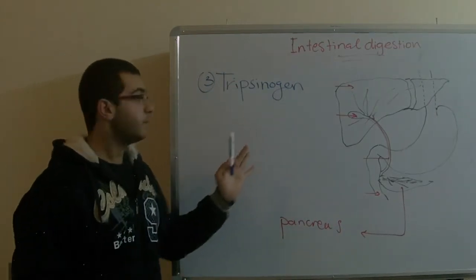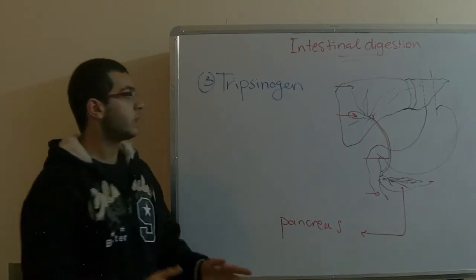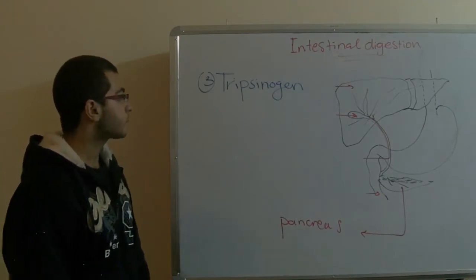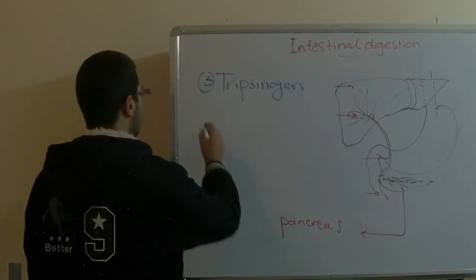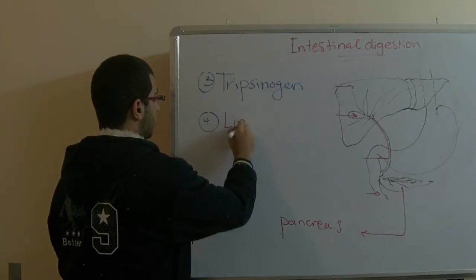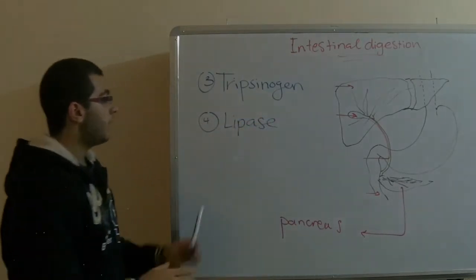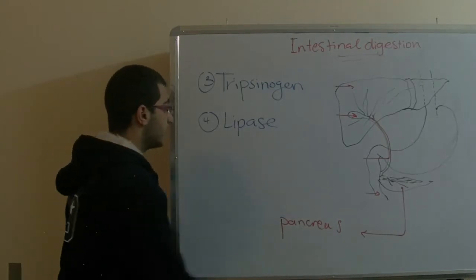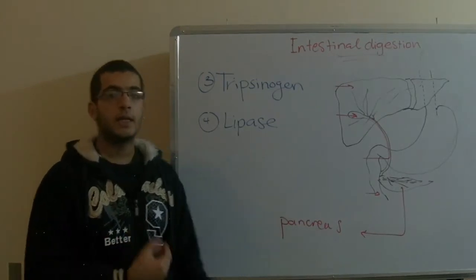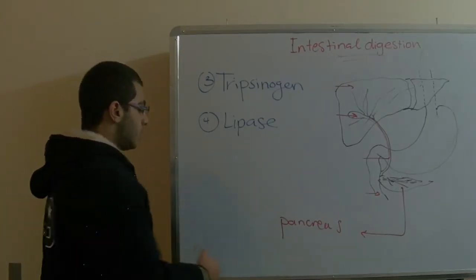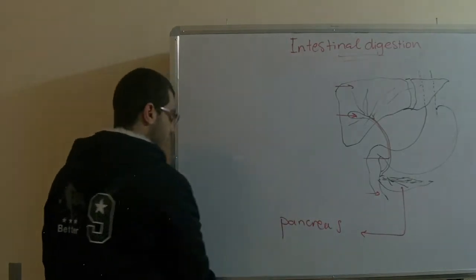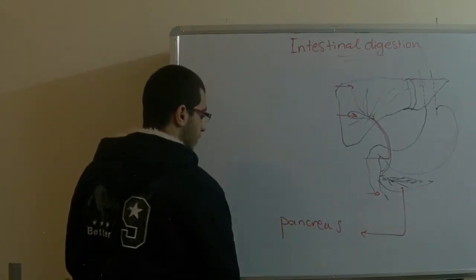This trypsinogen works also in the process of digestion of proteins. And at last we have the lipase enzyme. This lipase enzyme catalyzes the emulsifying of the fats into fatty acids and glycerol. So these were the pancreatic secretions.